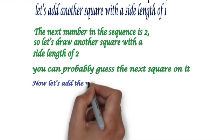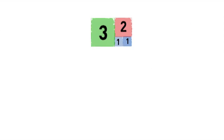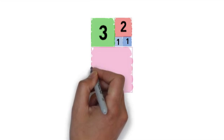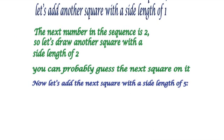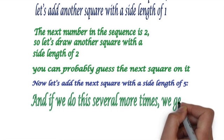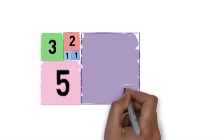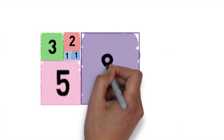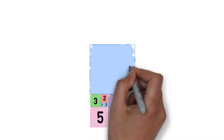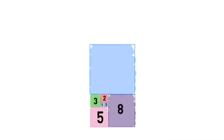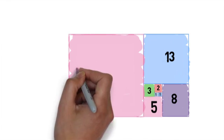Now let's add the next square with a side length of 5. And if we do this several more times, we get 8, 13, 21.